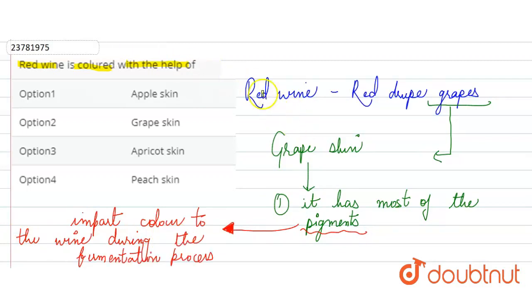So guys, I have told you that we assume it's because of grapes. But actually, what happens is that these grapes have so many pigments in their skin. And these pigments, when there is fermentation process, impart color to the wine. So red wine's color is because of grape skin.